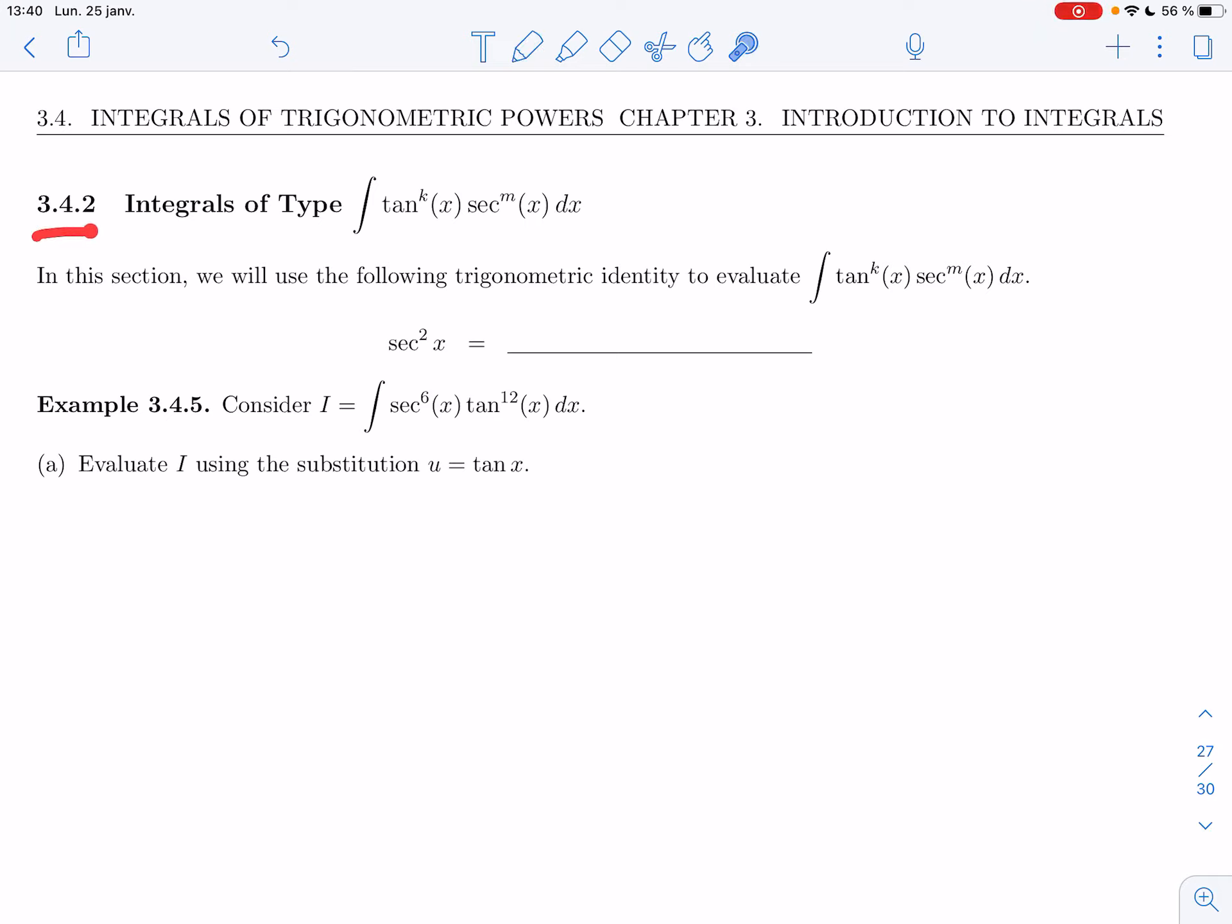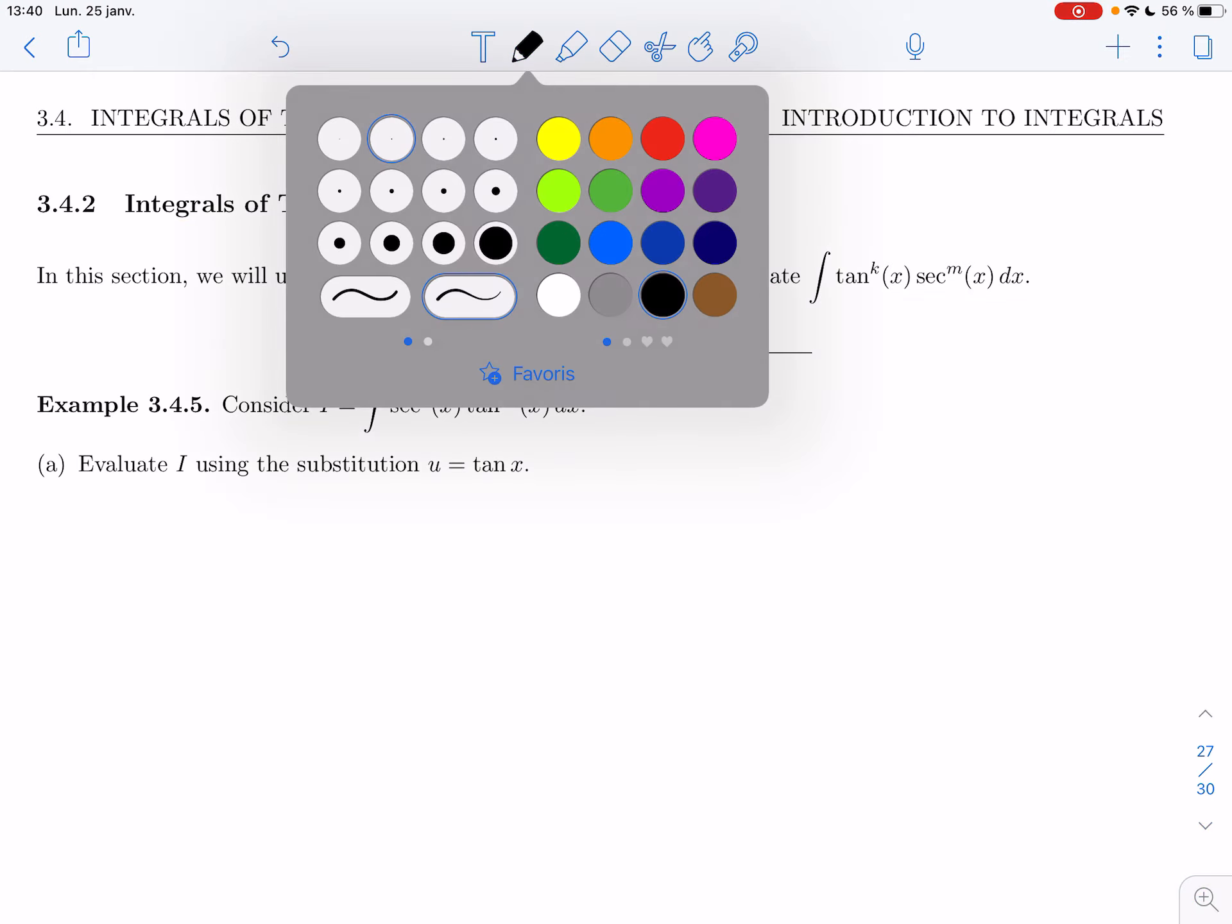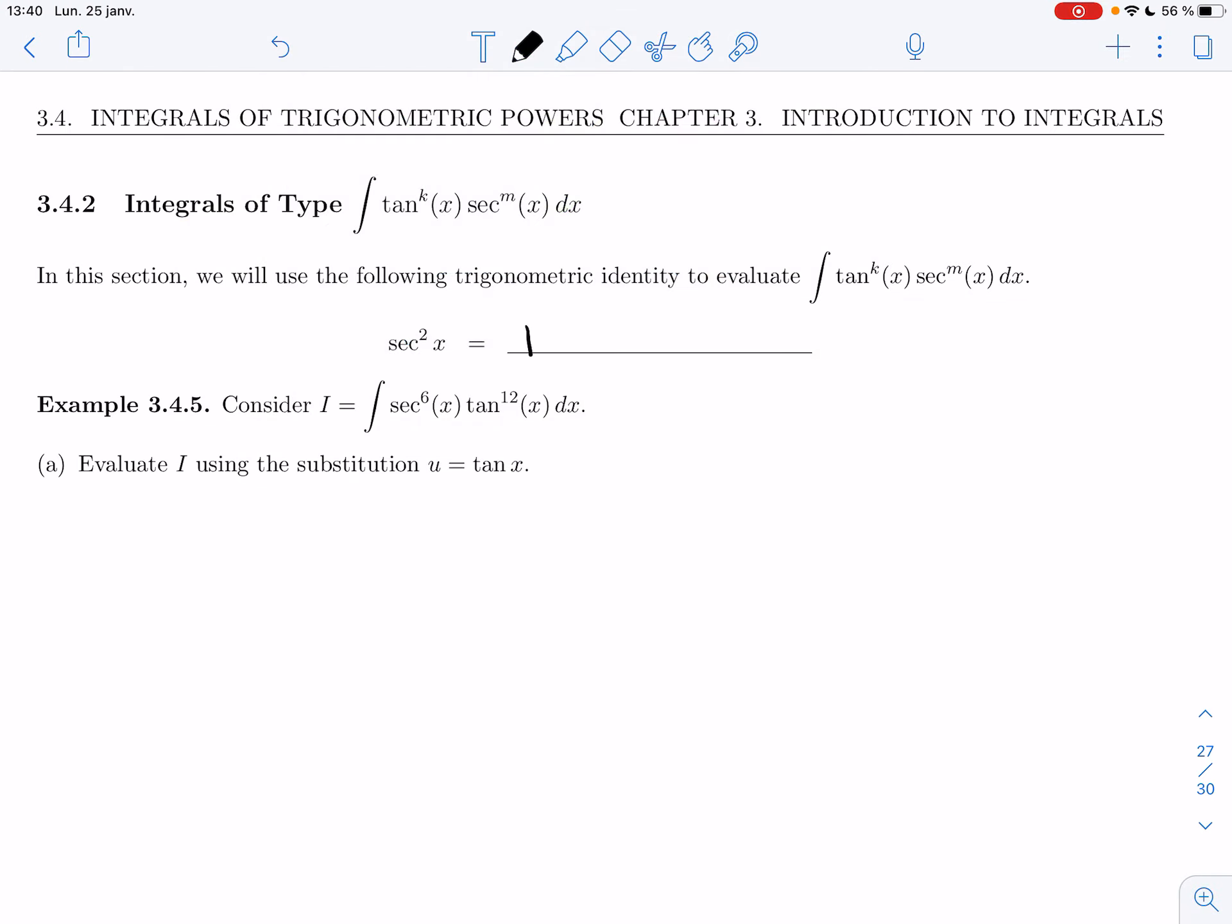Alright, in section 3.4.2, we'll be looking at the second type of these trig powers. We'll be looking at tan to the k, secant to the m. In this section, we'll be using the following trig identities to evaluate tan to the k, secant to the m. Its integral - we're gonna use that secant squared of x is tan squared of x plus one.